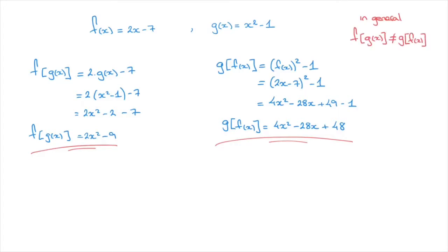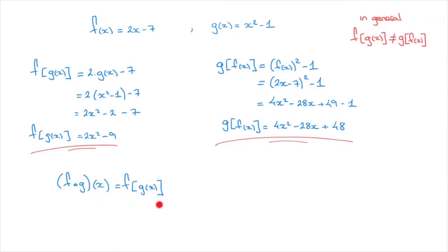Another thing worth pointing out is that to refer to f of g of x, we wrote f followed by square brackets inside of which we wrote g of x. But there's actually another notation we need to be familiar with. Another way of writing f of g of x is: in parentheses, f followed by a little empty circle, g, close parentheses, and x in parentheses — this is read f of g of x, and it means the same thing. Similarly, we can write g of f of x as, in parentheses, g small circle f, close parentheses, of x.